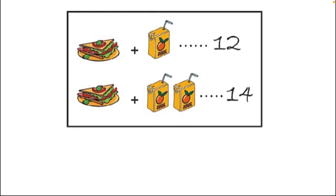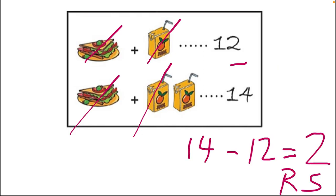First, cut one burger from the upper side and one burger from the lower side. Now cut one juice — there is one juice in the upper equation, and from the two juices in the lower equation you cut one packet, leaving one remaining. We are comparing both equations. Cutting means subtraction in mathematics, so 14 minus 12 — and 14 minus 12 is two.